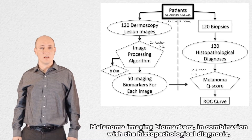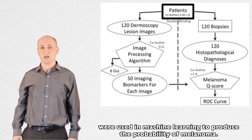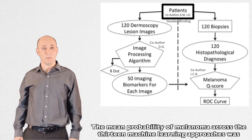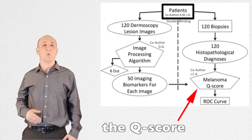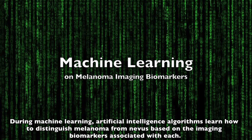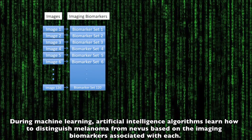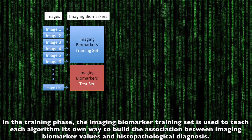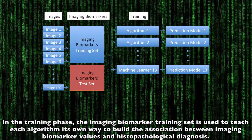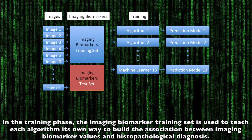Melanoma imaging biomarkers, in combination with the histopathological diagnosis, were used in machine learning to produce the probability of melanoma. The mean probability of melanoma across 13 machine learning approaches was the Q-score. During machine learning, artificial intelligence algorithms learn how to distinguish melanoma from nevus based on the imaging biomarkers associated with each. In the training phase, the imaging biomarker training set is used to teach each algorithm its own way to build the association between imaging biomarker values and the histopathological diagnosis.